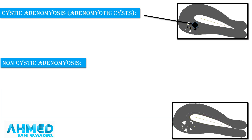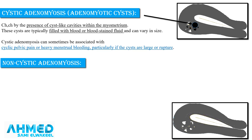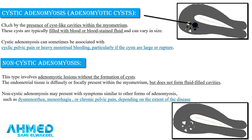We also have cystic and non-cystic adenomyosis. Cystic adenomyosis is characterized by the presence of cyst-like cavities within the myometrium. These cysts are typically filled with blood or blood-stained fluid and can vary in size. Cystic adenomyosis can sometimes be associated with cyclic pelvic pain or heavy menstrual bleeding, especially if the cysts are large or ruptured.